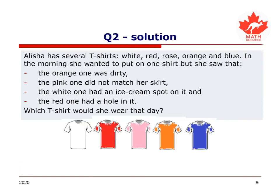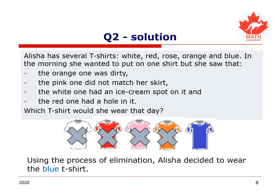Let's solve. This is going to be the process of elimination in full view. We will not work out directly what is the right answer, but we will eliminate all the incorrect answers until the one that remains is the correct one. The orange one was dirty — she didn't wear that. The pink one did not match her skirt — not the pink one. The white one had an ice cream spot — not the white shirt. The red one had a hole in it — she has better options. By the process of elimination, the blue shirt is the only one that remains. If you selected E, blue, you got the correct answer.